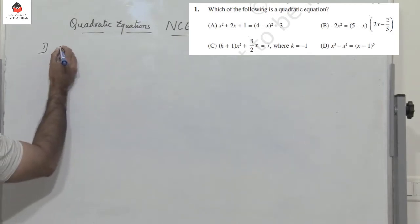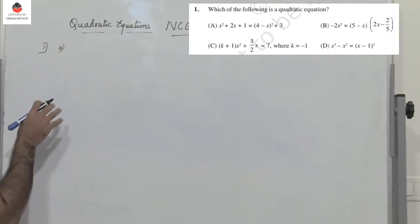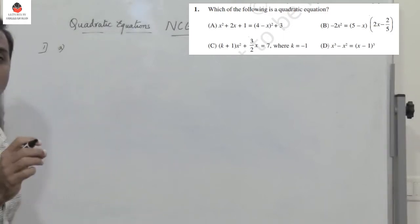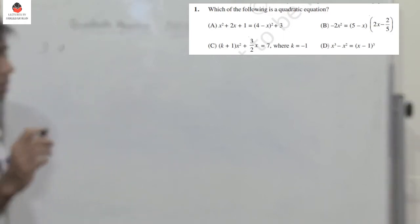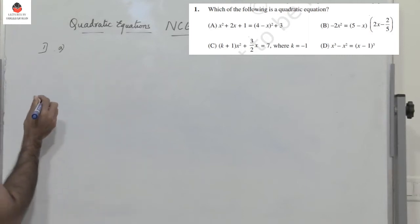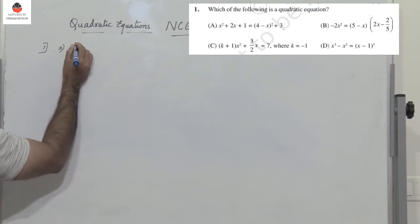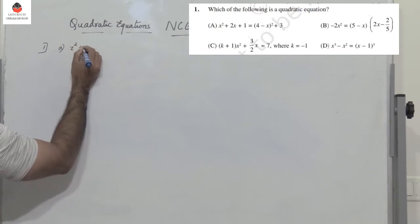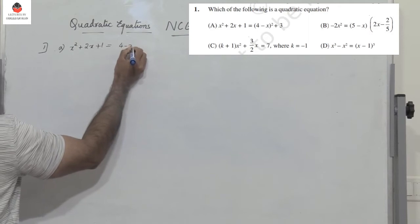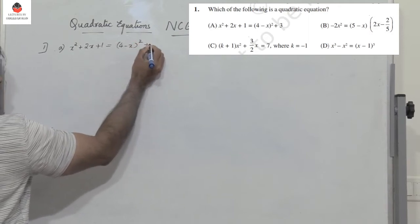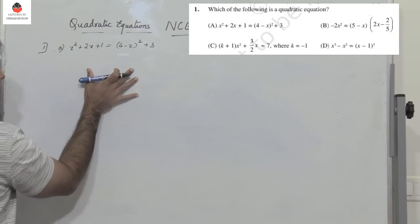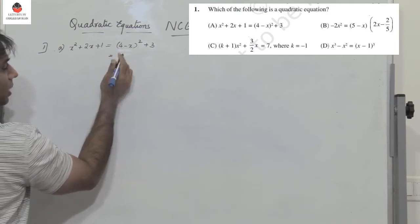What is the easiest way to identify? When we have MCQ questions, we need to find the right answer using minimum time. So let's take the first one: x squared plus 2x plus 1 equals 4 minus x, the whole square, plus 3. Without solving the entire equation, if I expand this, I get x squared minus 8x on the right side.